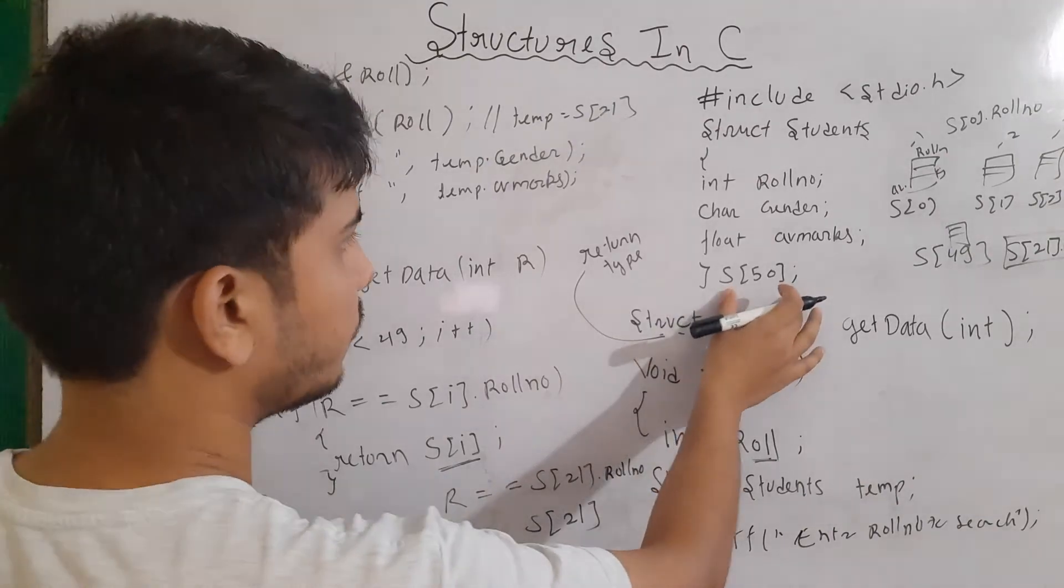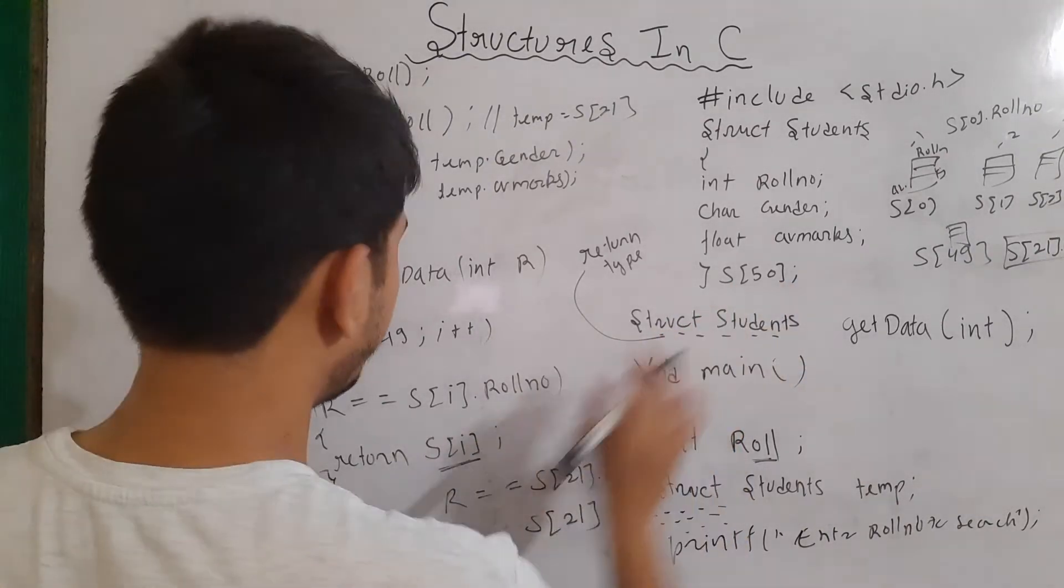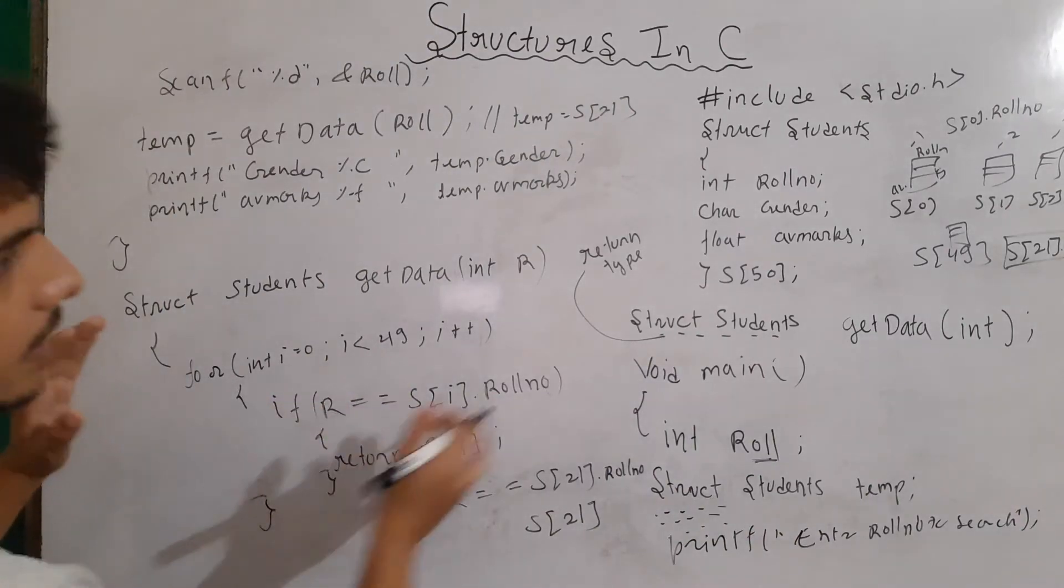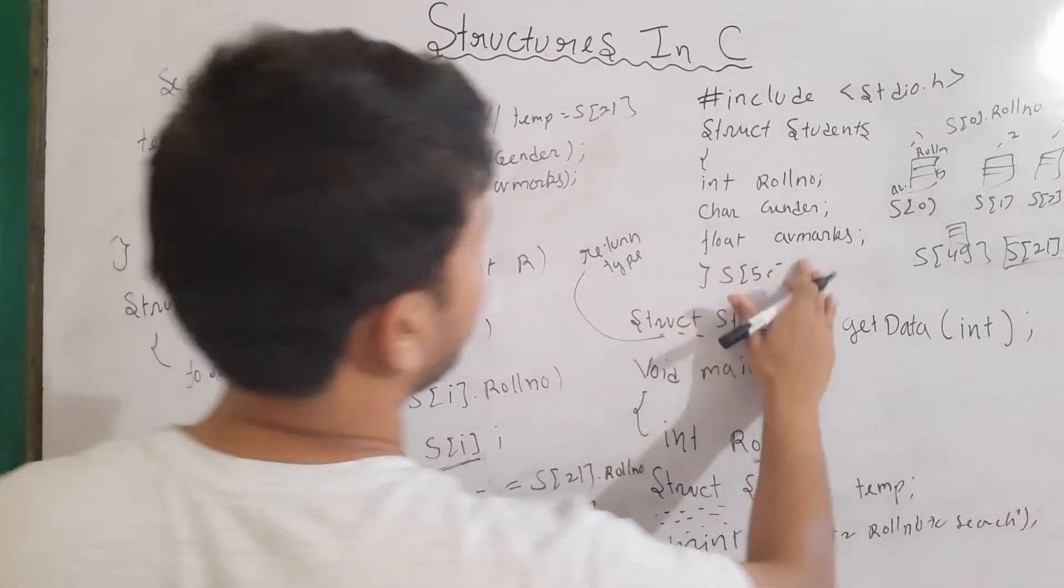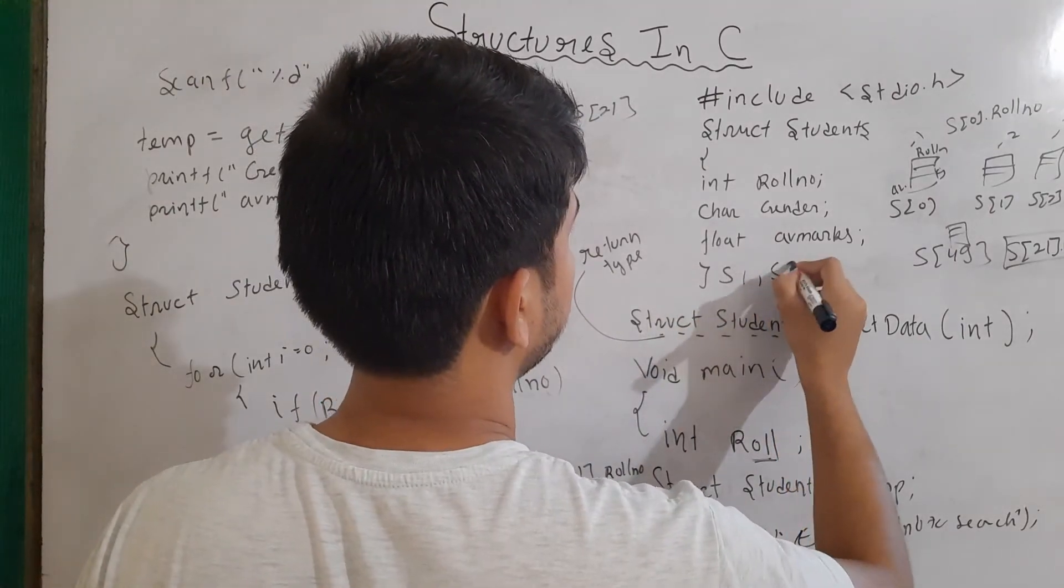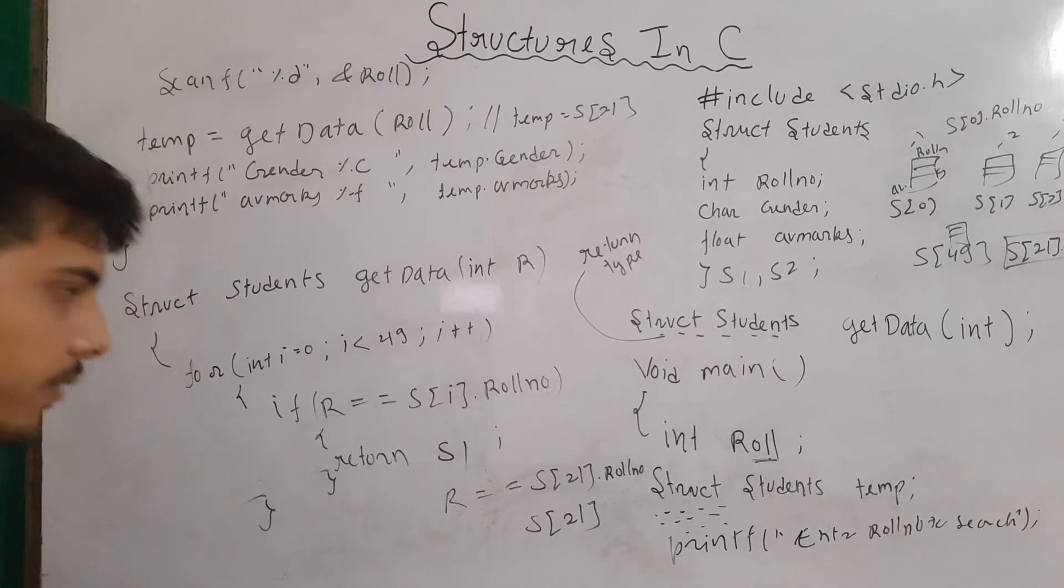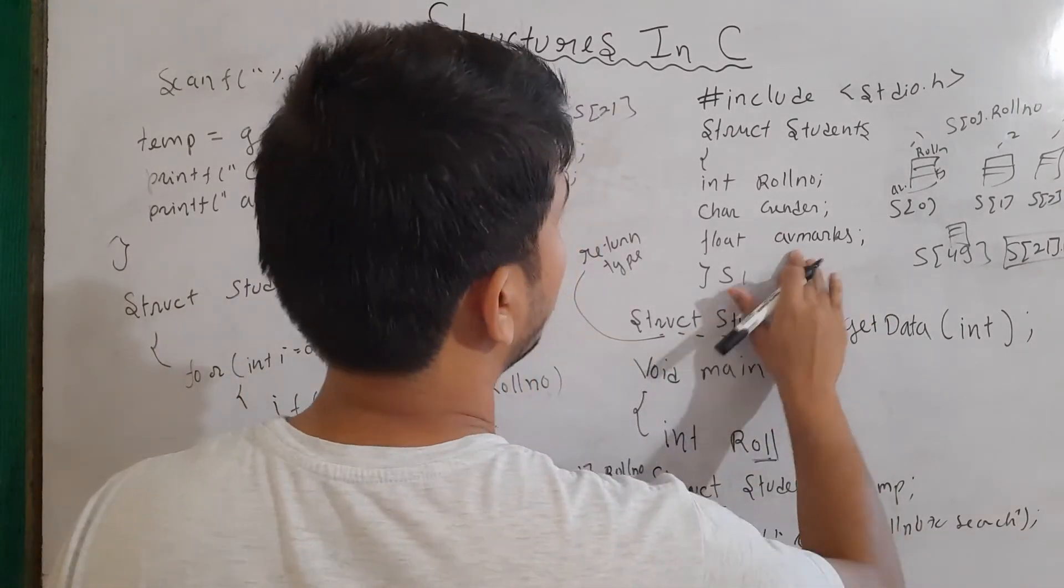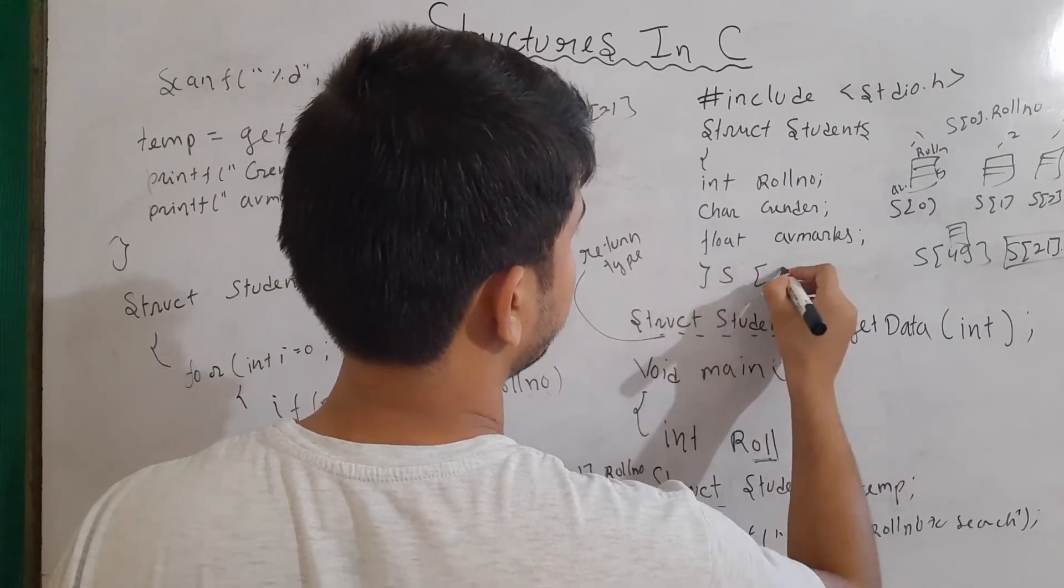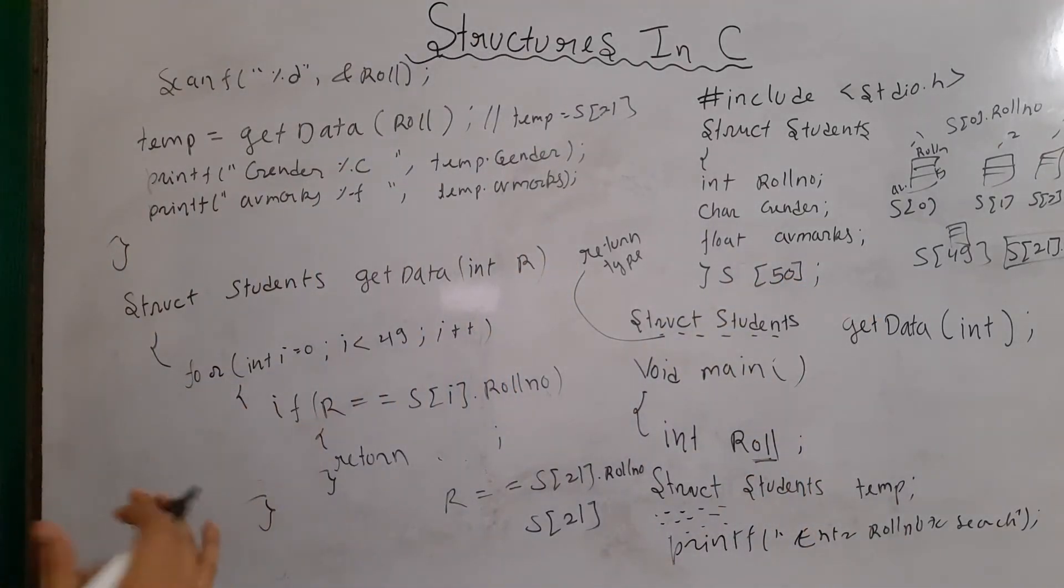Now, this is for the array of structure. You can also return the normal variables. For example, here instead of returning let's say these s50 is not present then you can write a simple variable. Let's say s1 is there, s2 is there. Then you can also return the structure variable as s1. So, there is no problem in that. I had told you according to the array of structure because this is what mostly used. So, remember that this is how we are using it.